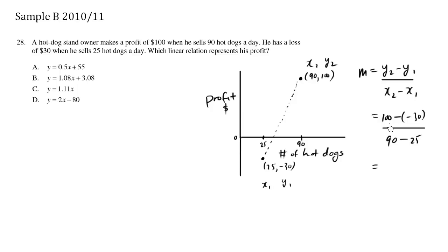So we have 100 plus 30 is 130 over 90 minus 25 is 65 which equals 2.